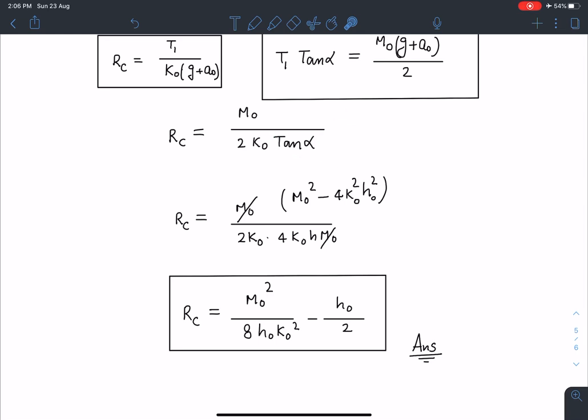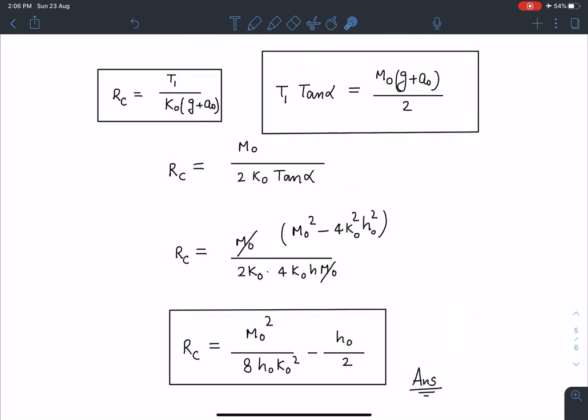I can substitute the tan alpha value which I have derived here and when I simplify this, I am going to get Rc is equal to m0 square divided by 8 h0 k0 square minus h0 by 2. This is going to be the answer for this problem and once I know Rc and tan alpha, I can find T max also. And if I substitute this tan alpha value here, I'll be getting this T1 also, though those steps I'm not writing here, but I hope it is known to you that all four questions which were asked are known to you.